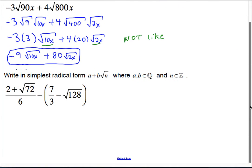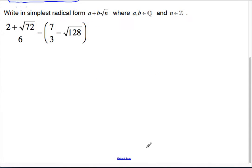This next example is going to take a little bit more thinking. We are asked to write in simplest radical form a plus b root n. Again, there's lots of clues here. Our final answer - a and b should be rational. That means they can be written as some kind of fraction. And n is an integer.